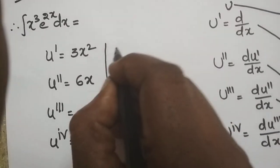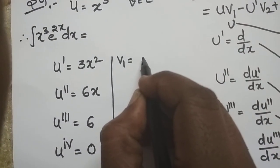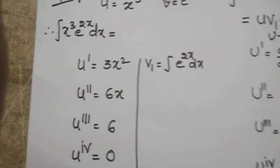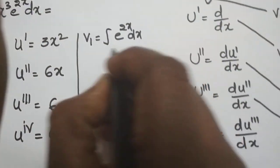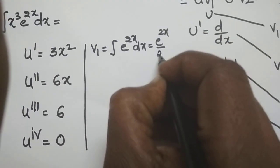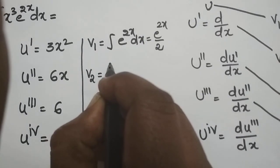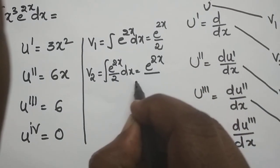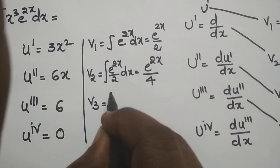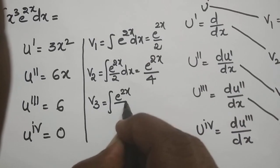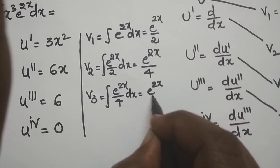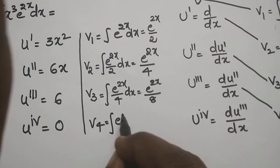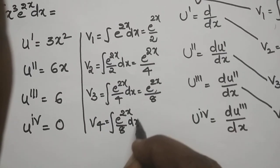For the integration side: v1 equals the integral of e to the power 2x dx, which equals e to the power 2x divided by 2. Then v2 equals the integral of e^(2x)/2 dx, giving e^(2x)/4. v3 equals the integral of e^(2x)/4 dx, giving e^(2x)/8. And v4 equals the integral of e^(2x)/8 dx, giving e^(2x)/16.